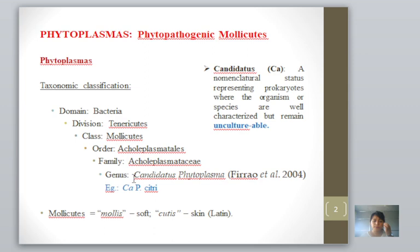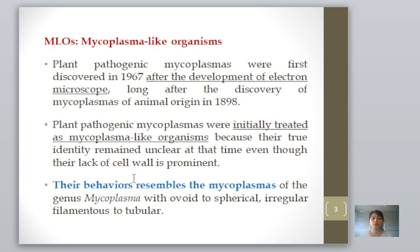The term mollicutes comes from Latin: 'mollis' meaning soft and 'cutis' meaning skin. They are called mollicutes because they do not have a cell wall and are bounded only by a unit membrane, making the outer boundary very soft. Before going into detail about phytoplasmas, we need to look at their history — how phytoplasmas were discovered. Initially, when they were discovered, researchers found they resembled mycoplasmas, especially in not having a cell wall, but they were isolated from plants, not from diseased animals or human beings.